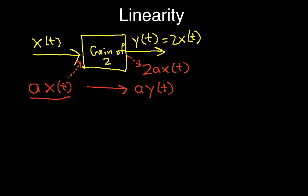So if I'm putting a x of t into the system, then the thing that comes out of the system is 2 a x of t. Now is this guy, what we have to ask ourselves now, is this guy equal to 2 a times y of t? Well, when I put x of t into the system, I got 2 x of t out.